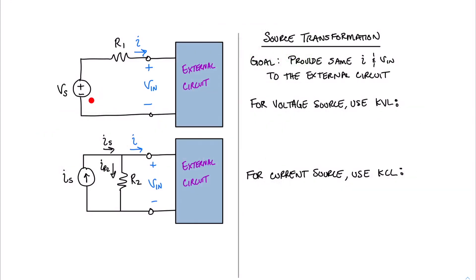Here we have drawn a more complete version of what we mean by not changing the terminal characteristics. We have a voltage source and its series resistance connected to some sort of external circuit. We've drawn our current I and our voltage coming into this external circuit from our voltage source. These two things in blue are the things that we cannot change — we need these to be exactly the same regardless of whether our source is a voltage source with its series resistance or a current source with its parallel resistance. Our goal is to provide the same current and voltage to the external circuit.